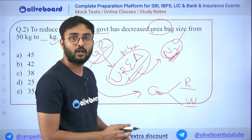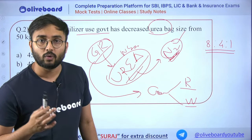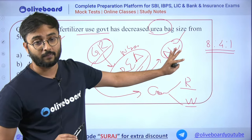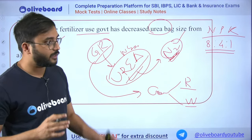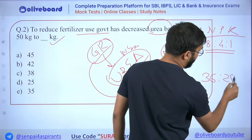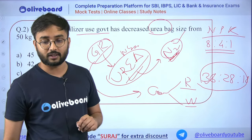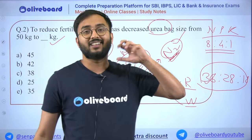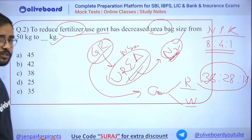The ideal NPK ratio is 8:4:1. However in states like Punjab and Haryana, it has become 36:28:18 due to excessive urea use. Heavy use of nitrogenous fertilizers results in salinity of soil in the long term. Therefore the government is trying to decrease the urea bag size.